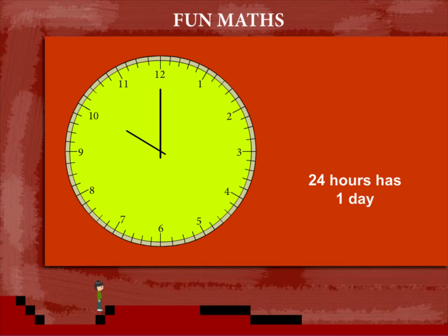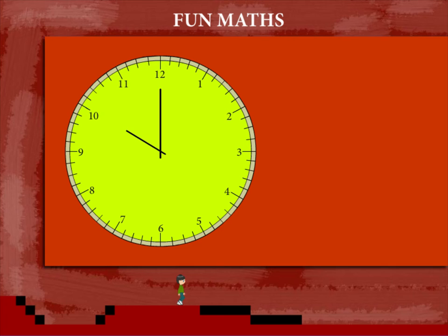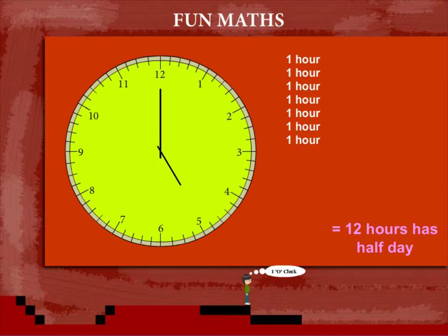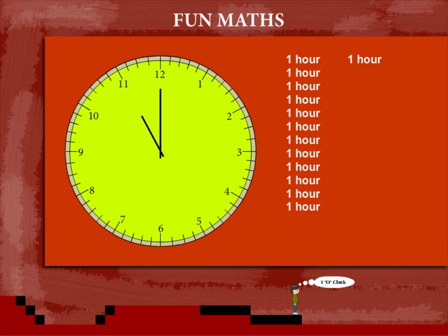24 hours by the clock is one day. From 10 o'clock to 10 o'clock makes 12 hours. 12 hours is half a day. Again, from 10 o'clock to 10 o'clock is another 12 hours. Thus, 24 hours by the clock is one day.